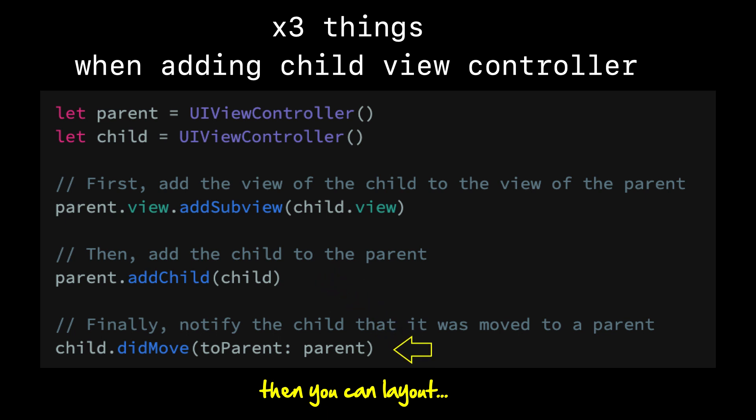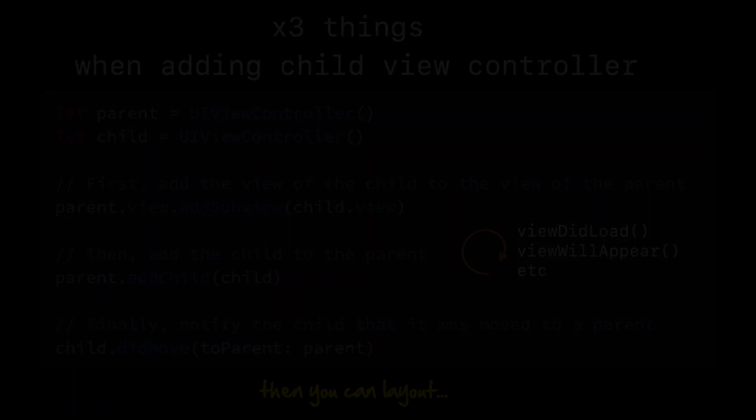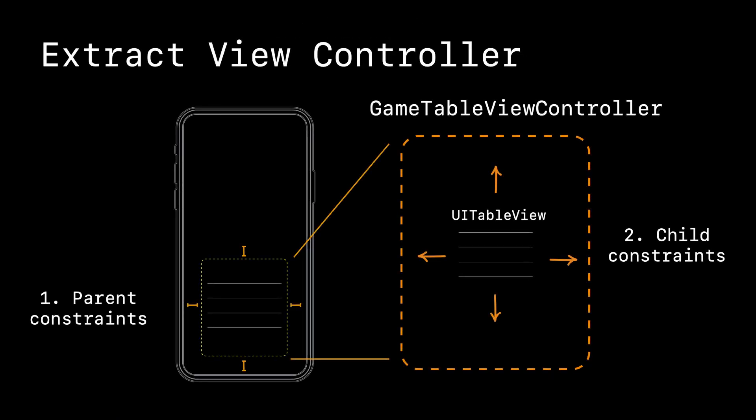Second, add the child view controller to the parent itself. Third, call didMove on the child passing the parent in. When we do these three lines, we're hooking the child view controller up to the parent's lifecycle — this is what enables viewDidLoad, viewWillAppear, and all that lifecycle stuff. If you add a child and find the lifecycle events aren't triggering, it's probably because you missed one of these steps.